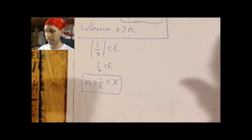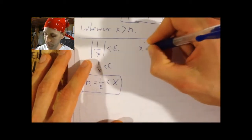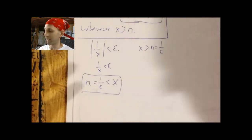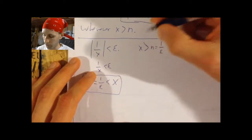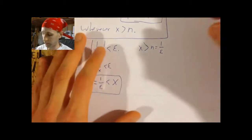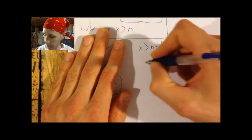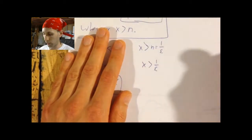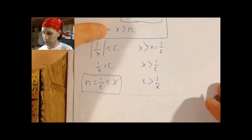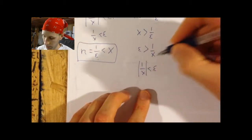Watch how this is going to work. We let epsilon be given — arbitrarily small. All we have to do is let x be greater than N, which is 1 over epsilon. We're assuming epsilon is a tiny number, like 1 trillionth. So x being greater than 1 over epsilon — 1 over 1 trillionth — is actually a very large number. If we let x be greater than the reciprocal of the tolerance given, that implies x is greater than 1 over epsilon. Cross-multiplying gives epsilon is greater than 1 over x, which means 1 over x is less than epsilon, and since everything is positive we get the absolute value.